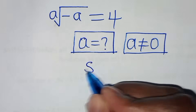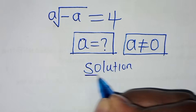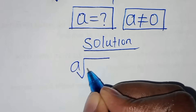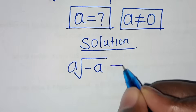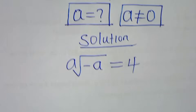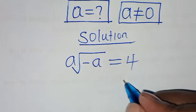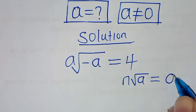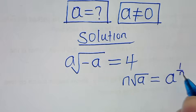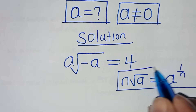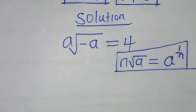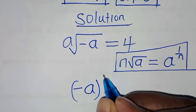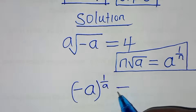Let's present a solution. We have the eighth root of minus a equal to 4. We use the property that the nth root of a is the same as a raised to the power of 1 over n. Applying this, we have minus a raised to the power of 1 over 8, equal to 4.